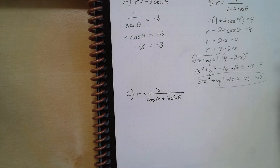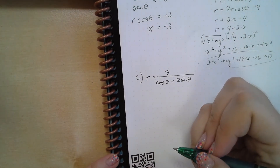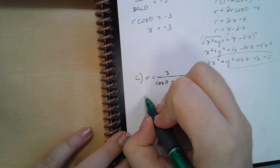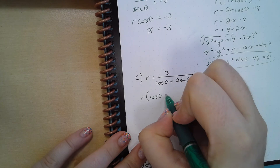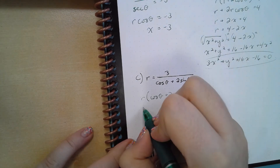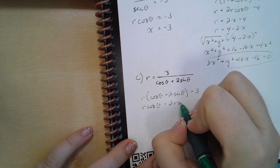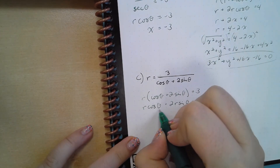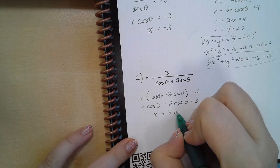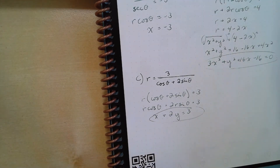One more example: r = 3 / (cos θ + 2 sin θ). Multiplying both sides: r(cos θ + 2 sin θ) = 3. Distributing: r cos(θ) + 2r sin(θ) = 3. Since r cos(θ) = x and r sin(θ) = y, we get x + 2y = 3. Simple and easy.